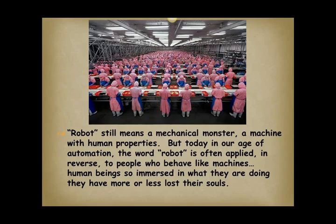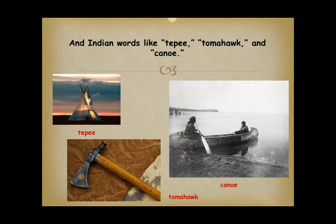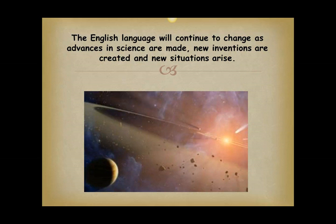Language is continually changing. The settling of North America brought to the English language a score of new words to fit new situations — words like sidewalk, hot dog, and tractor, and Indian words like teepee, tomahawk, and canoe. The English language will continue to change as advances in science are made, new inventions are created, and new situations arise.